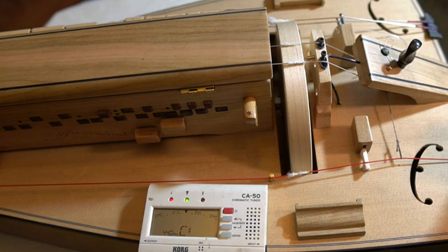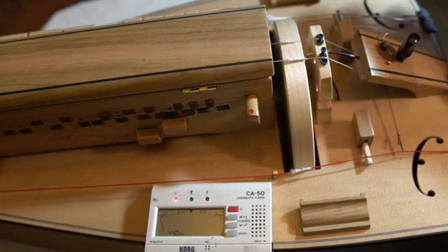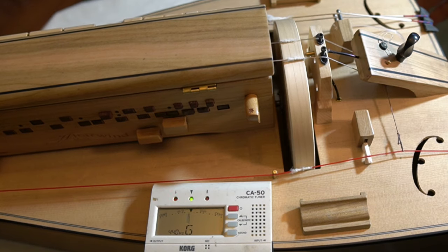The way this tuner works, I want the needle right in the middle and the green light on top with no red lights around it. See how I have a red light there? So I want to sharpen it up a little bit.